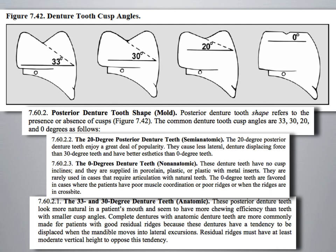Zero-degree teeth are referred to as monoplane teeth, also known as non-anatomical teeth. These denture teeth have no cusp inclines and are supplied in porcelain, plastic, or plastic with metal inserts. They are rarely used in cases that require articulation with natural teeth, and are favored in cases where patients have poor muscle coordination, poor ridges, or when the ridges are in crossbite.